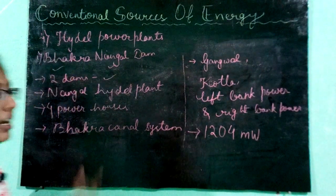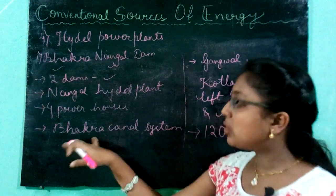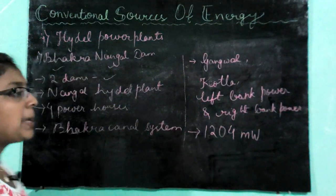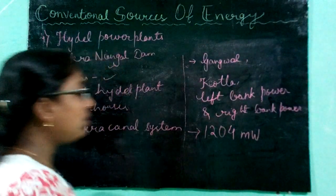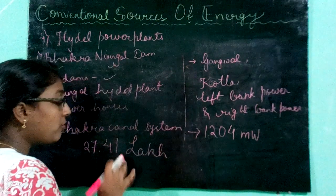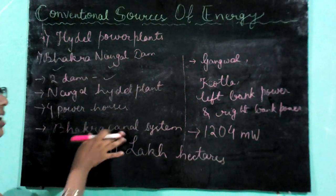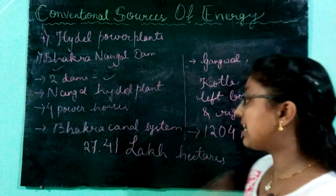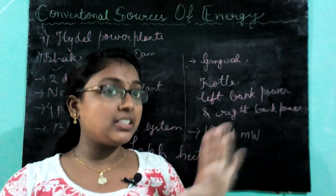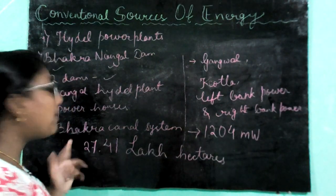The last component is the Bhakra canal system, which is used for irrigation. Around 27.41 lakh hectares of land is irrigated from this Bhakra canal system, covering the states of Punjab, Haryana, and Rajasthan.